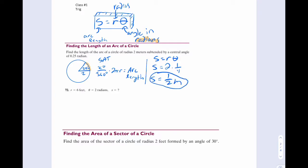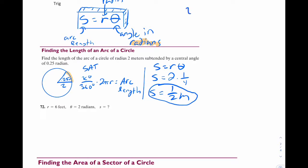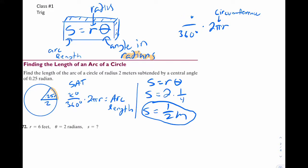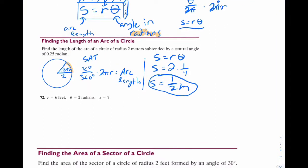Look how easy that is. To understand where this formula comes from, think about the SAT version: x over 360 multiplied by 2πR. If we're in radians, we change the 360 to 2π — then the 2π's cancel and you're left with Rθ. Let's try it again: S equals Rθ, R is 6, theta is 2, so S is 12 feet.